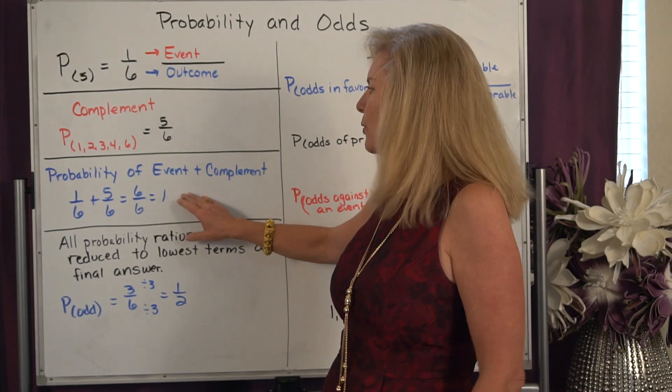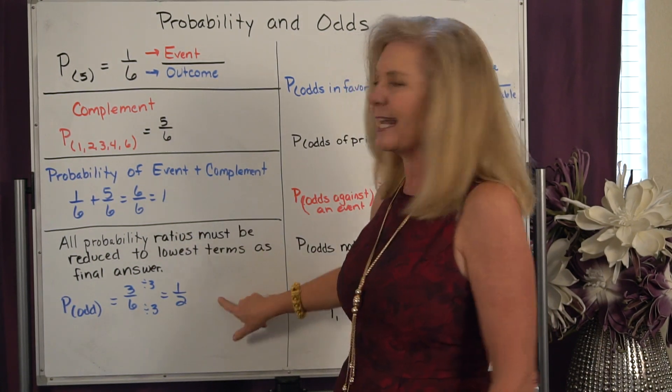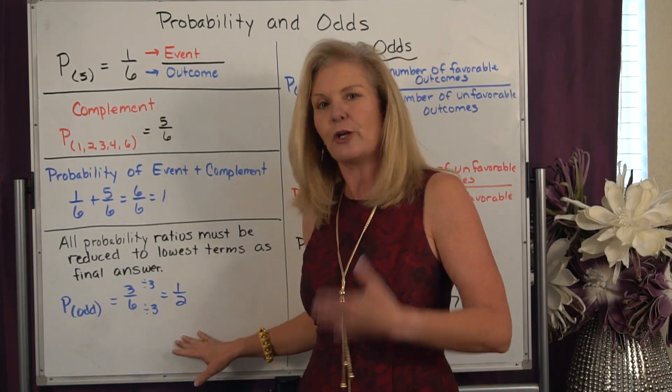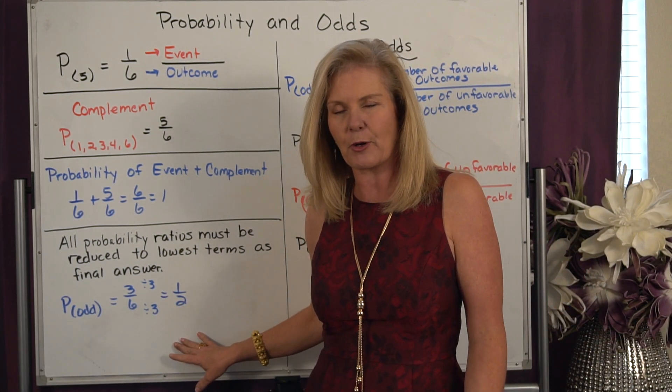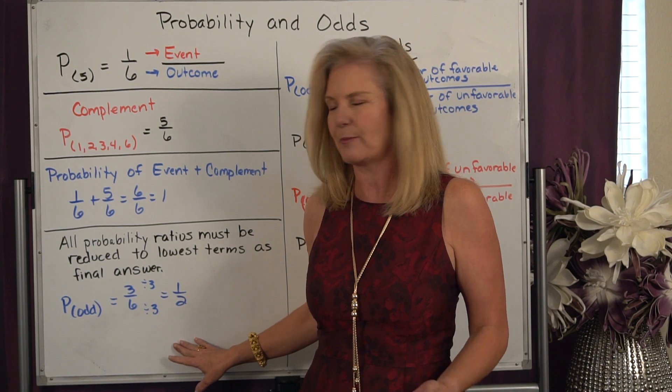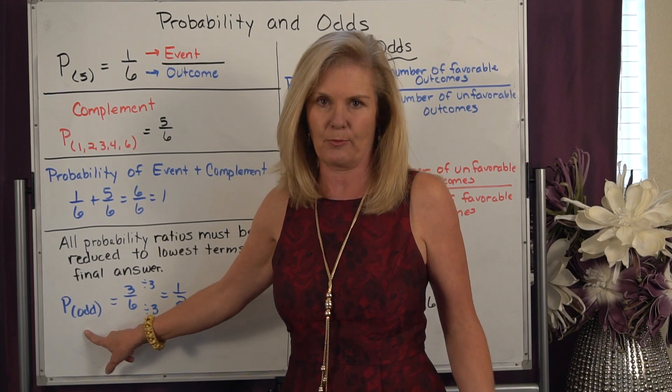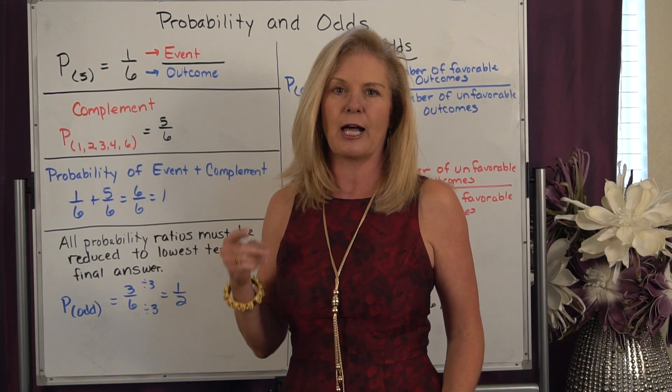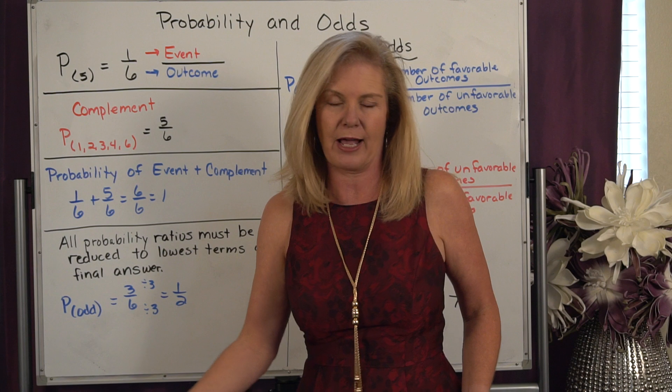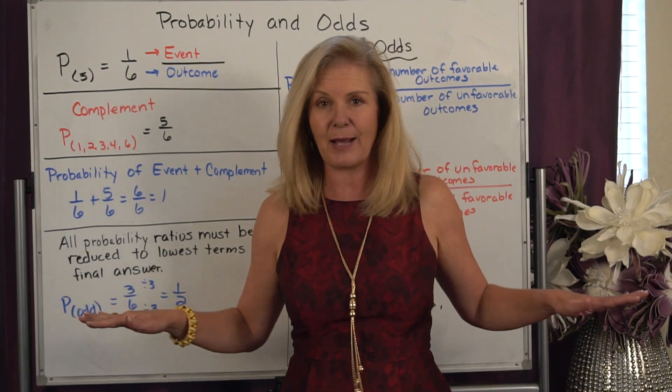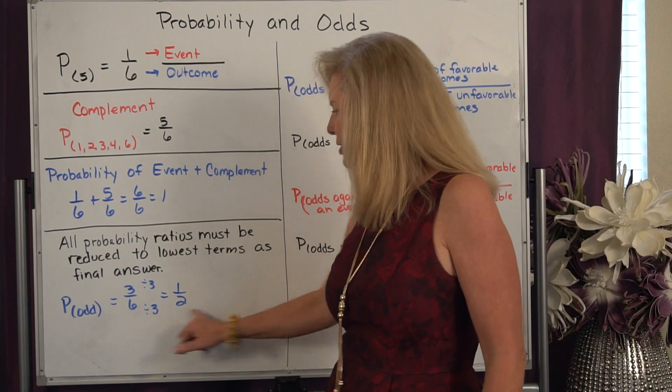Now just like with any other ratios that we've worked with, we know we always have to reduce our probability ratios down to its simplest form. So if I wanted to know what's the probability of rolling an odd number on a number cube - so a 1, a 3, or a 5 - well I have three out of the six ways. I couldn't leave my answer that way. I need to reduce that to lowest terms, so I'd always write 1 to 2.